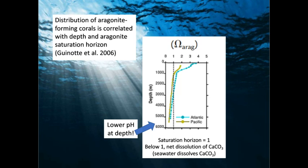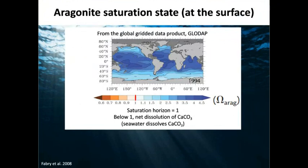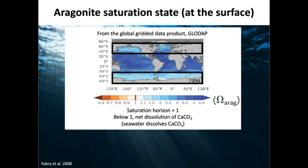There's also a difference in saturation state at the surface between the Atlantic and the Pacific, which may relate to the age difference between these oceans. At high latitudes and in the Arctic and Antarctic, we're already seeing light blue aragonite saturation states approaching the saturation horizon. This is specifically aragonite — found in many organisms — and the light blue color suggests we're getting close to the critical threshold, though it's not yet as critical in the tropics.